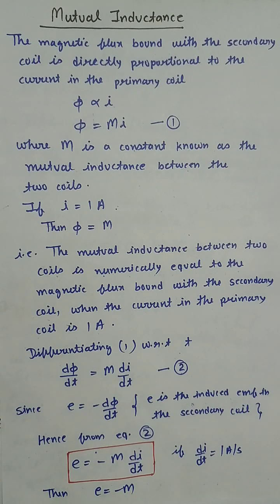That is, the mutual inductance between two coils is numerically equal to the induced EMF in the secondary coil if the rate of change of current in the primary coil is 1A per second. The dimensions of mutual inductance are same as the dimension of self-inductance.